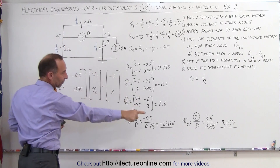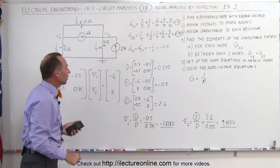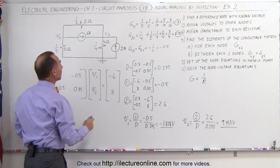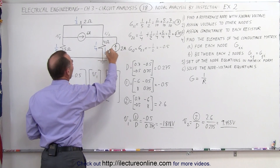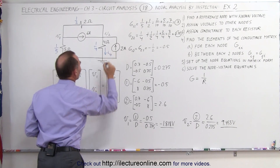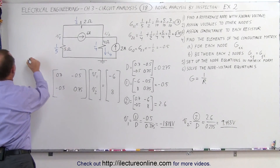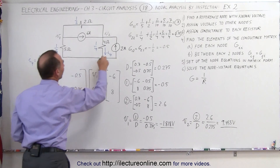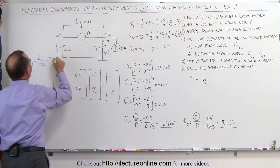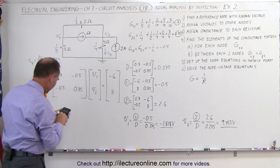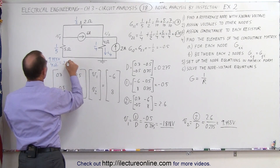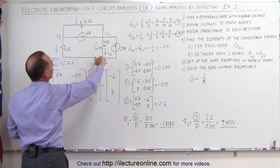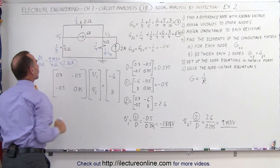Once you know the voltages at the nodes, it's easy to find current in any branch. For example, to find I4 — the current through the 4-ohm resistor — we take the voltage difference across it divided by 4 ohms. Node 2 is at 9.455 volts and the reference is 0, so 9.455 divided by 4 equals 2.36 amps. You can also find the current through any other branch using the same approach.